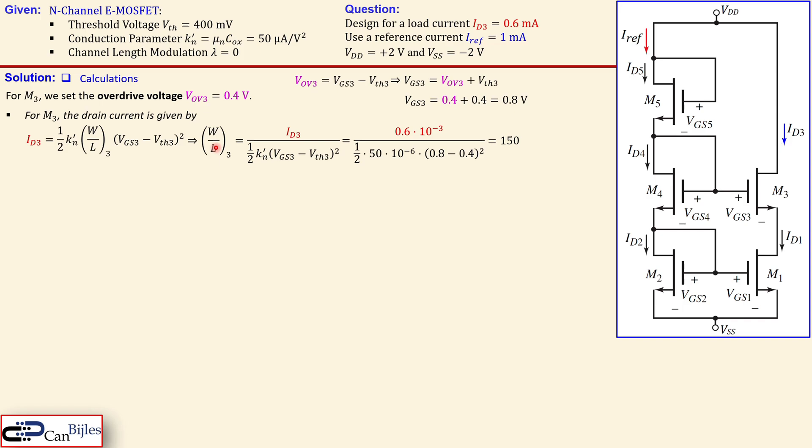So if you have an L for the process let's say one micrometer or one nanometer your W must be 150 times that. So we have a multiplication factor or multiplier of 150 for M3. We will see that shortly in the simulator what that means.